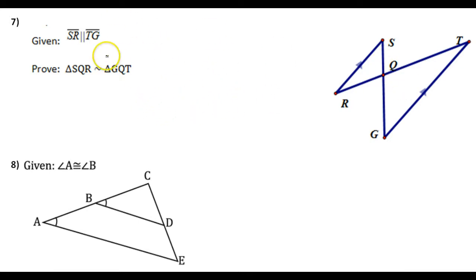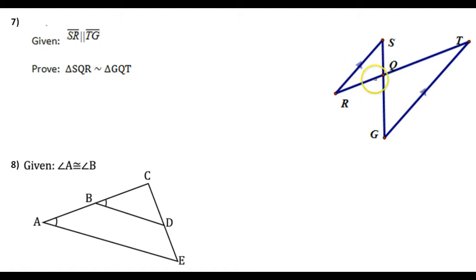We are given that these two lines are parallel. So what does that mean? If the lines are parallel, then we have parallel lines cut by a transversal.